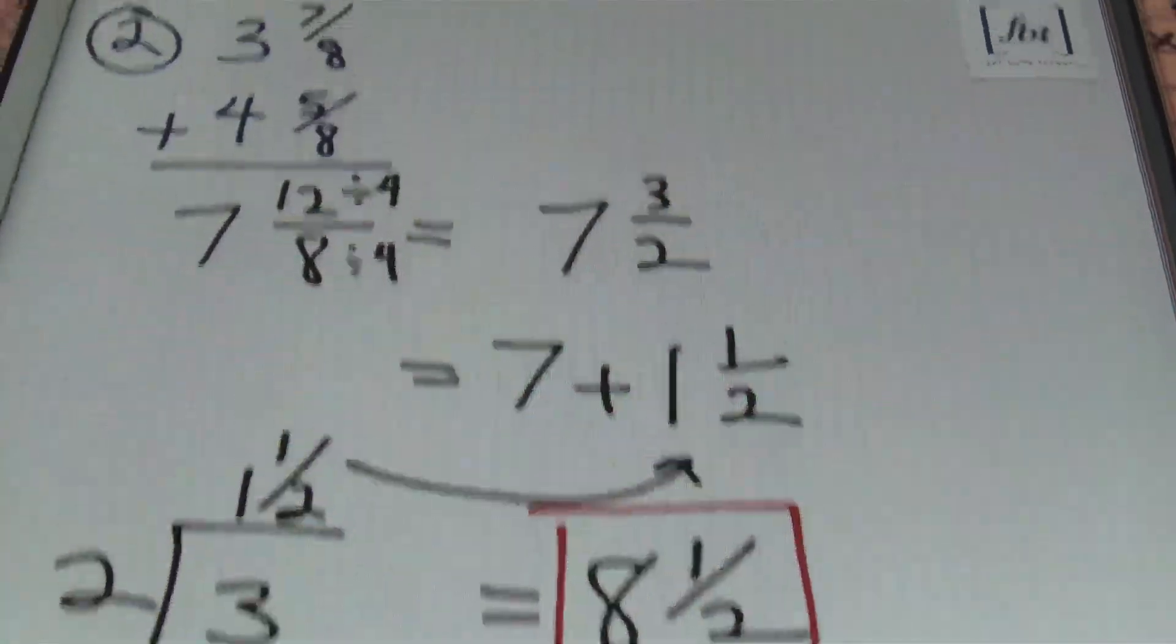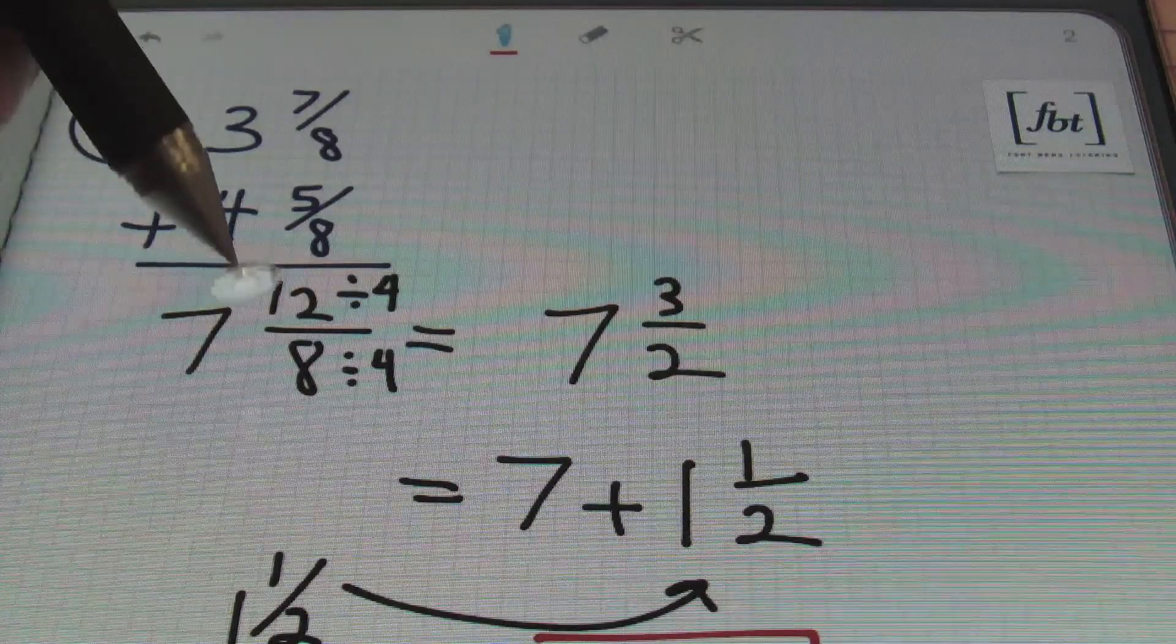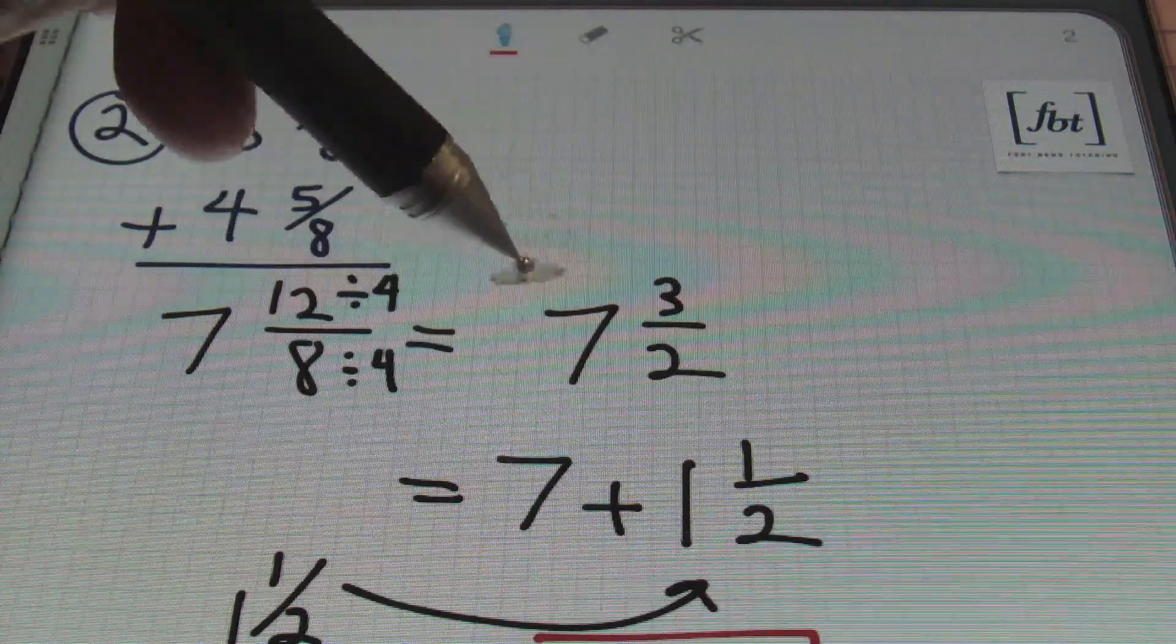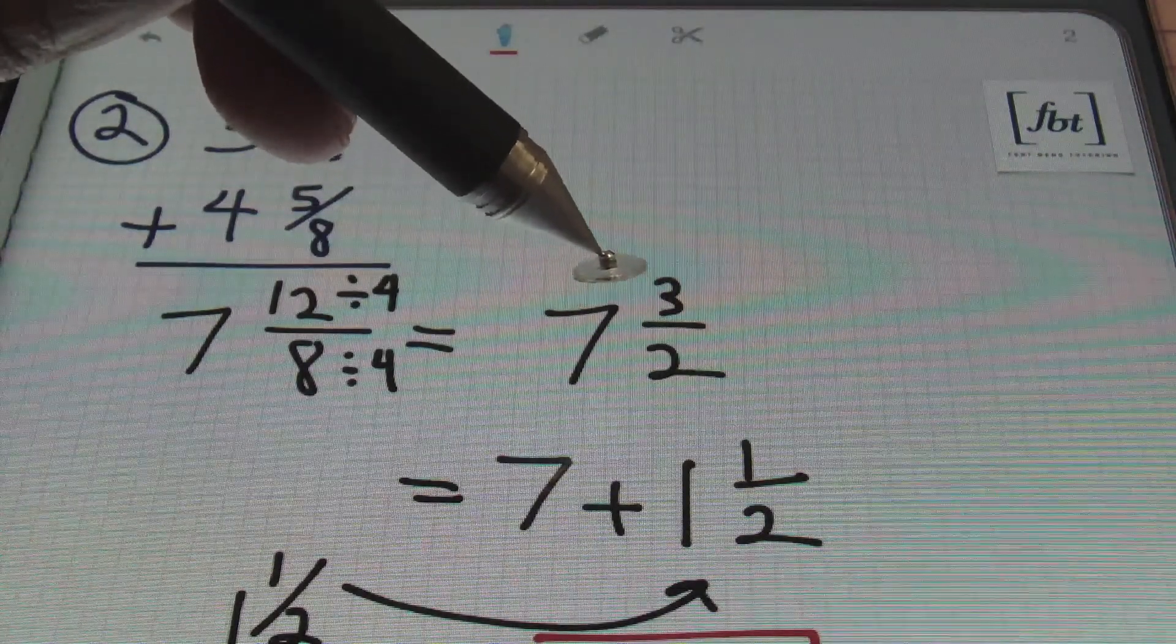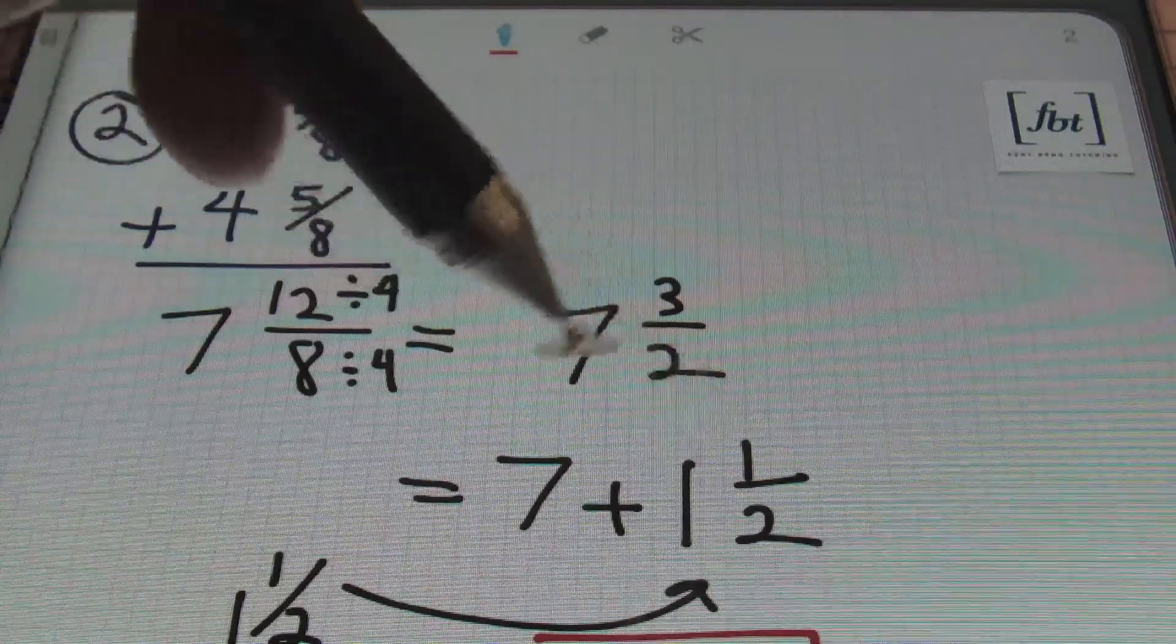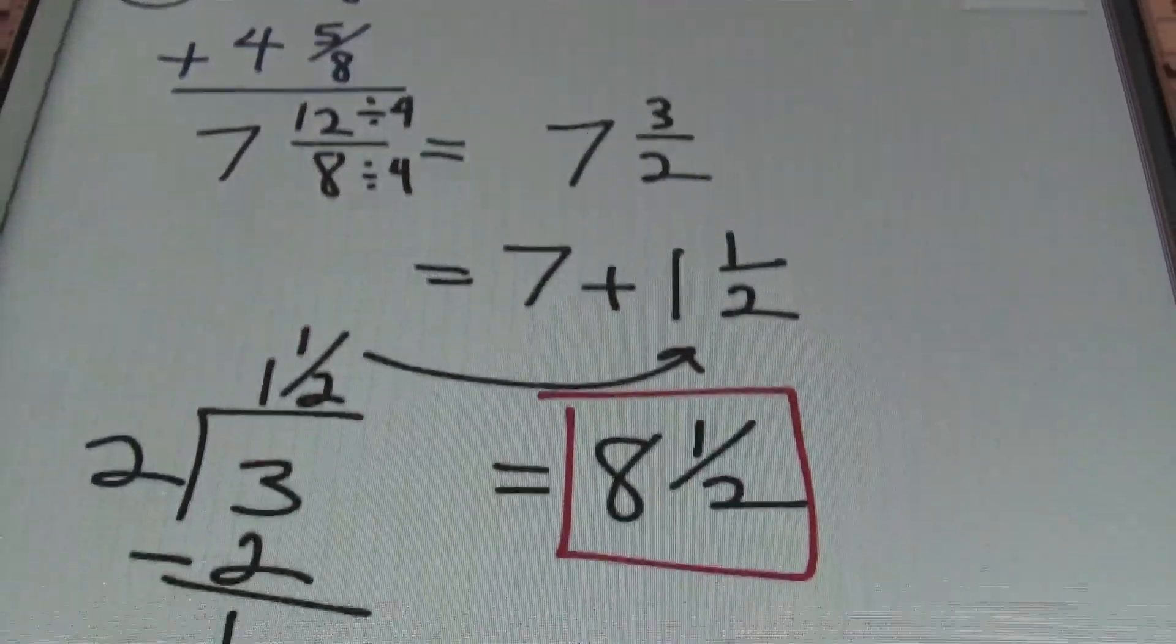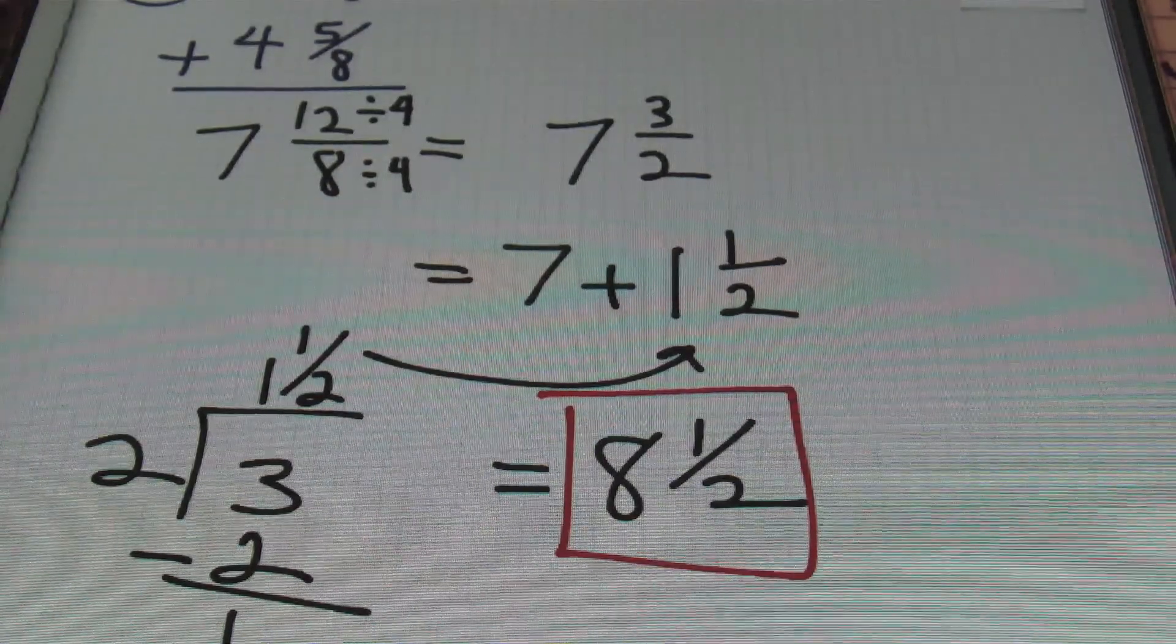Alright so remember ladies and gentlemen we had a result of 7 and 12/8. However we had to simplify this first by 4 to get 7 and 3/2. And then we had to get rid of this improper fraction by converting 3/2 into the mixed number 1 and a half. From there you can add 7 plus 1 to give you your result of 8 and a half which is the answer to the problem. Alright that was problem number 2.